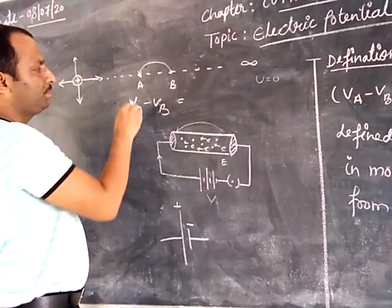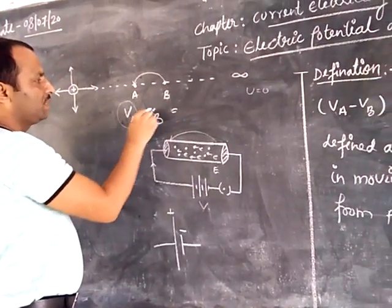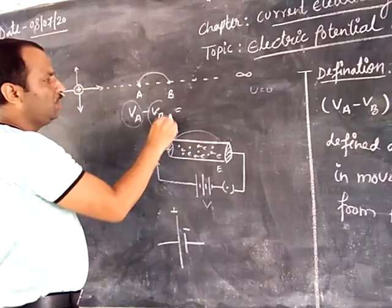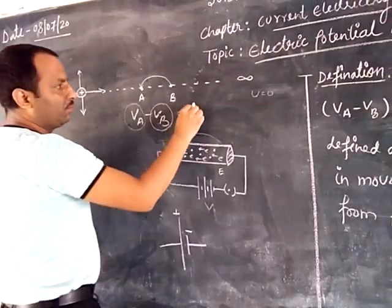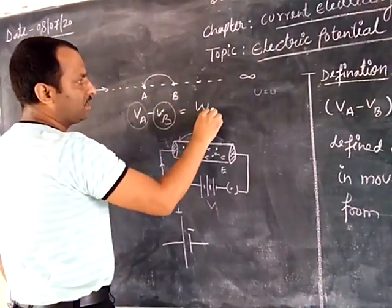The potential difference V_AB is defined as V_A minus V_B — that is, the higher potential minus the lower potential. This gives us the work done to bring a unit positive charge from point B to point A.